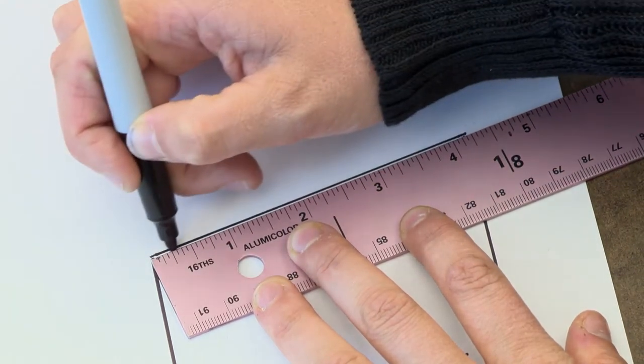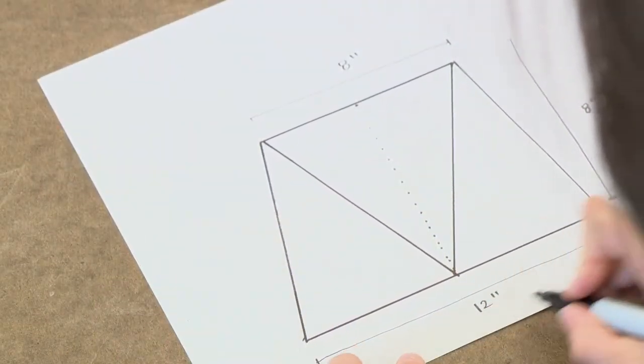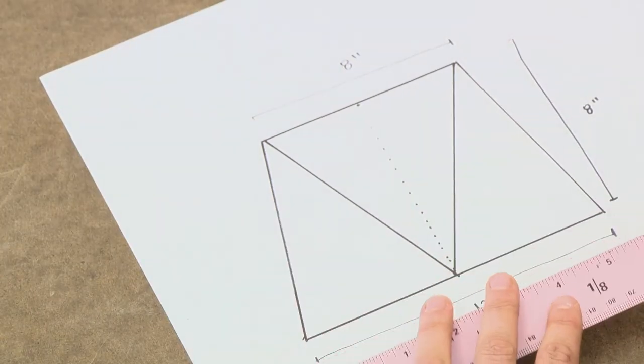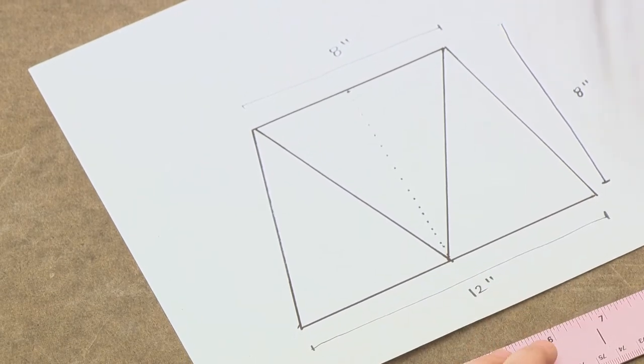So I drew my bridge here to scale, which means that this 12 inches is 6 inches on the ruler, but I know I want it to be twice that length overall.